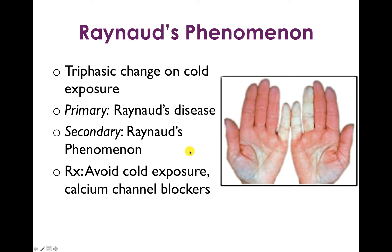However, if it's secondary to another process — we just saw Berger's disease or thromboangiitis obliterans — it's called Raynaud's phenomenon. Raynaud's phenomenon can be seen with a whole bunch of different connective tissue diseases and vasculitides, such as lupus, Sjögren's syndrome, and rheumatoid arthritis. The treatment is to avoid cold exposure, mittens rather than gloves, and calcium channel blockers may have some role in helping.